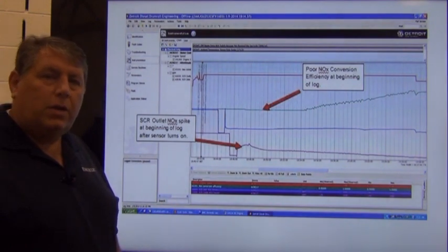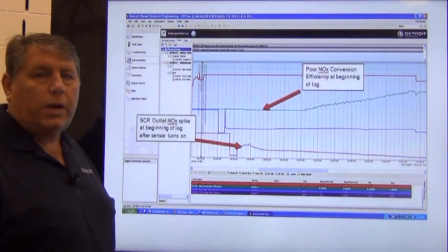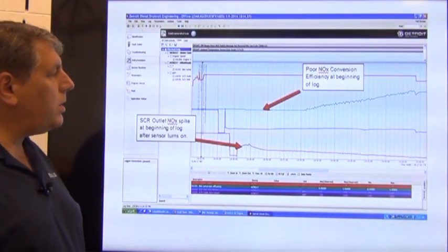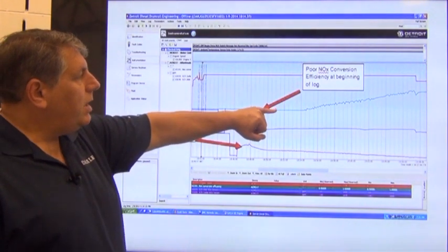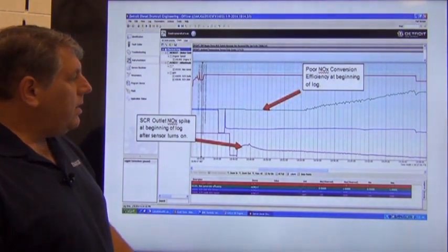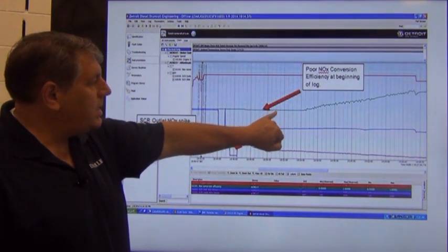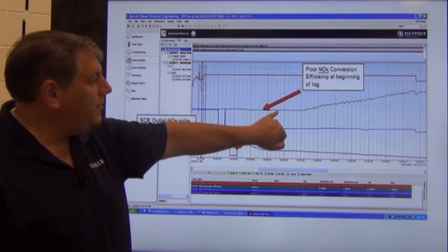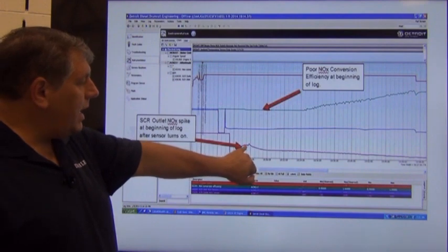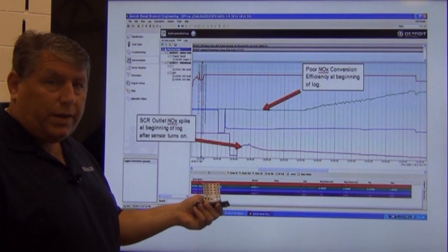Since we didn't have visually any excessive DEF, there are a couple conditions that can still require you to put the service awning on. If we take a look at a parked region and compare your NOx efficiency and also your inlet and outlet NOx sensors, you can see that in this one it's starting out with low NOx efficiency. But then we get a spike in our outlet NOx sensor. This is an indicator that we do have excessive DEF in the system and you'd want to install the awning.